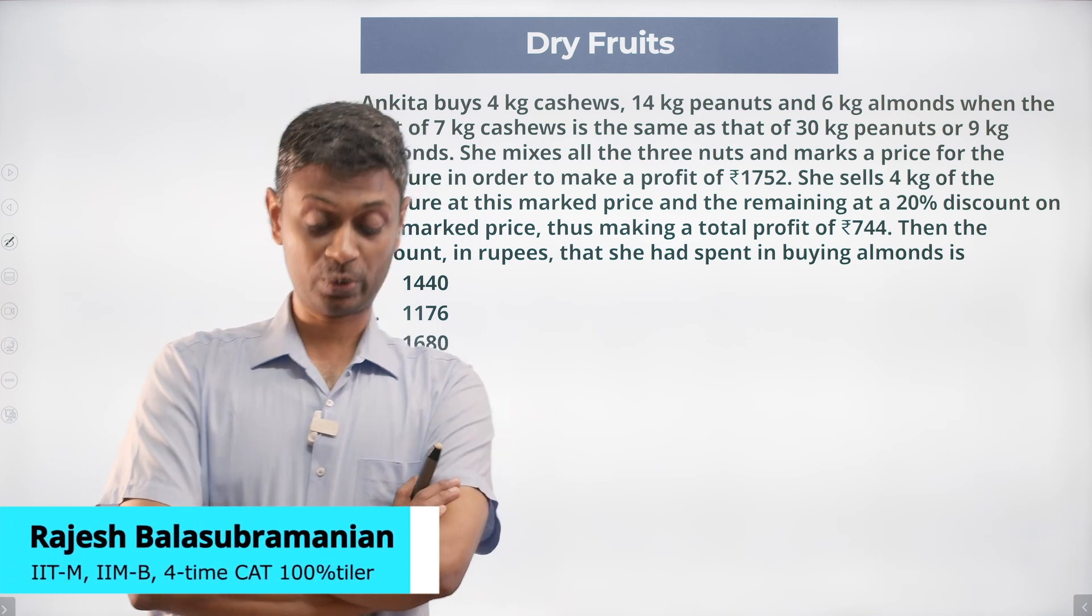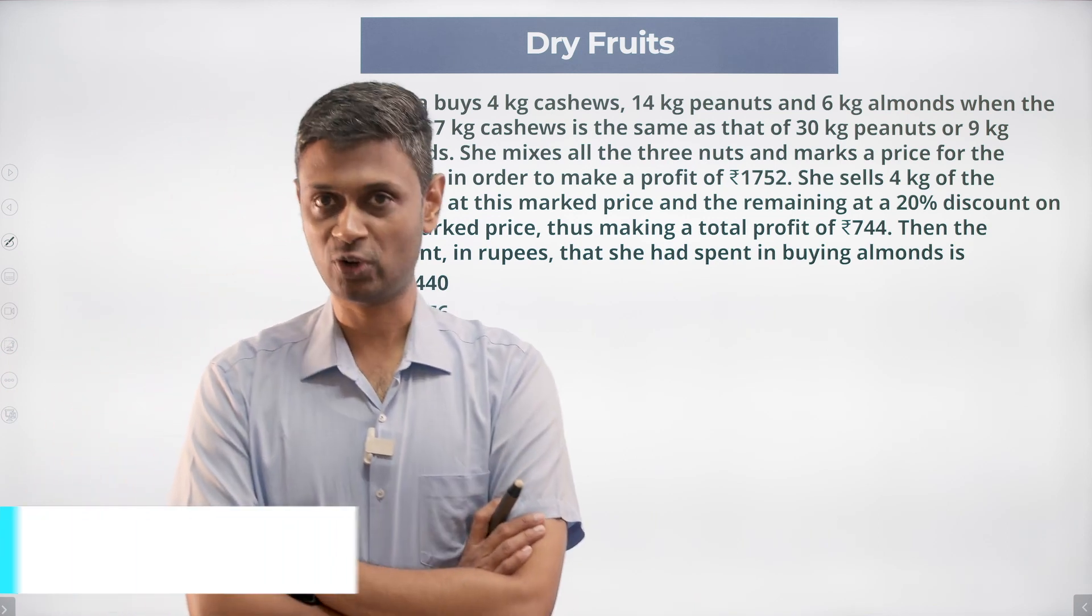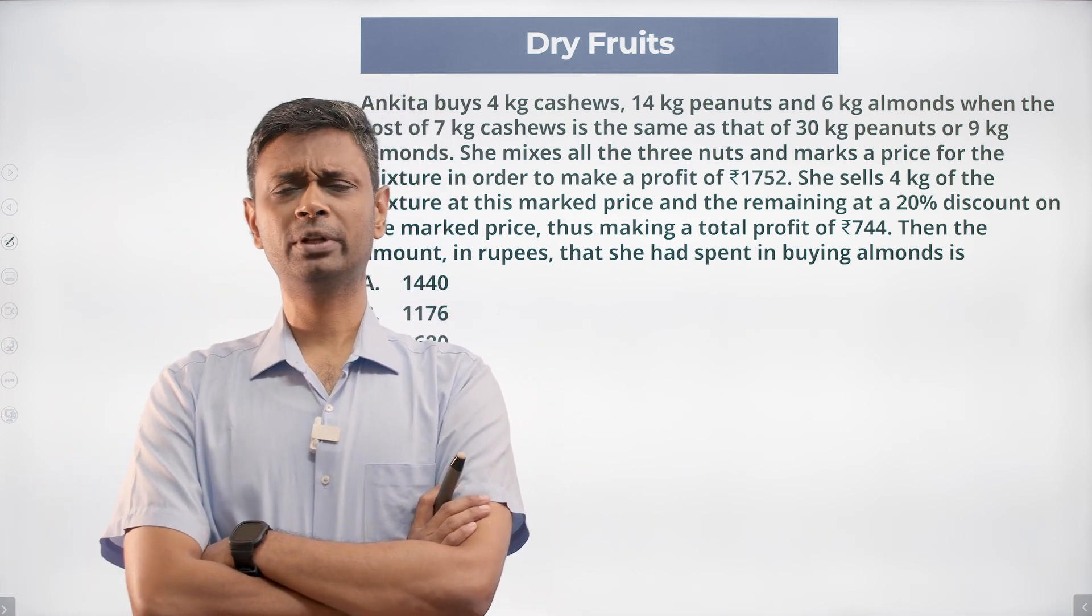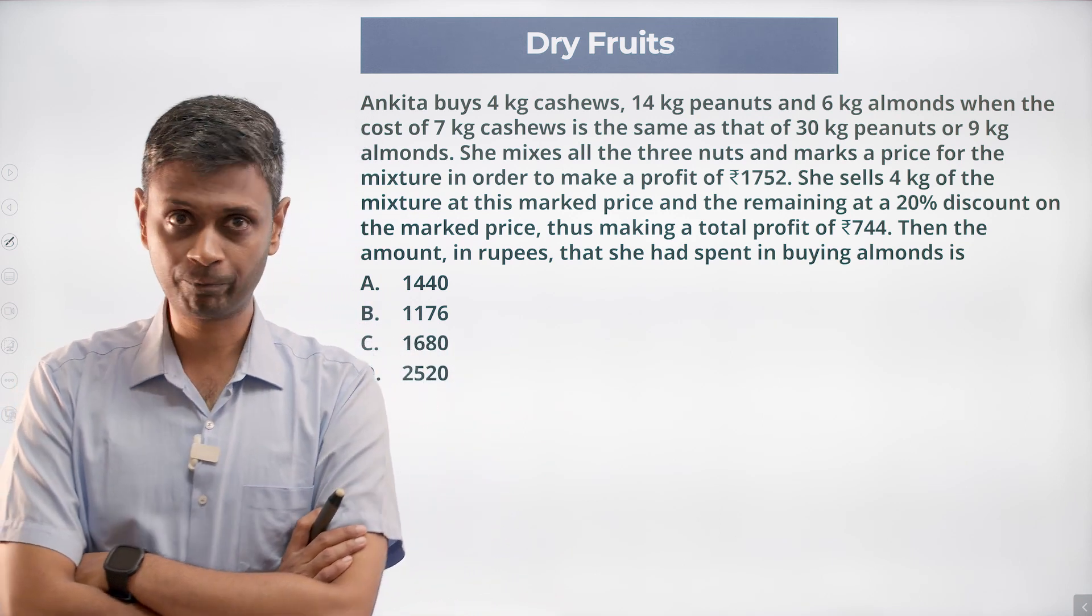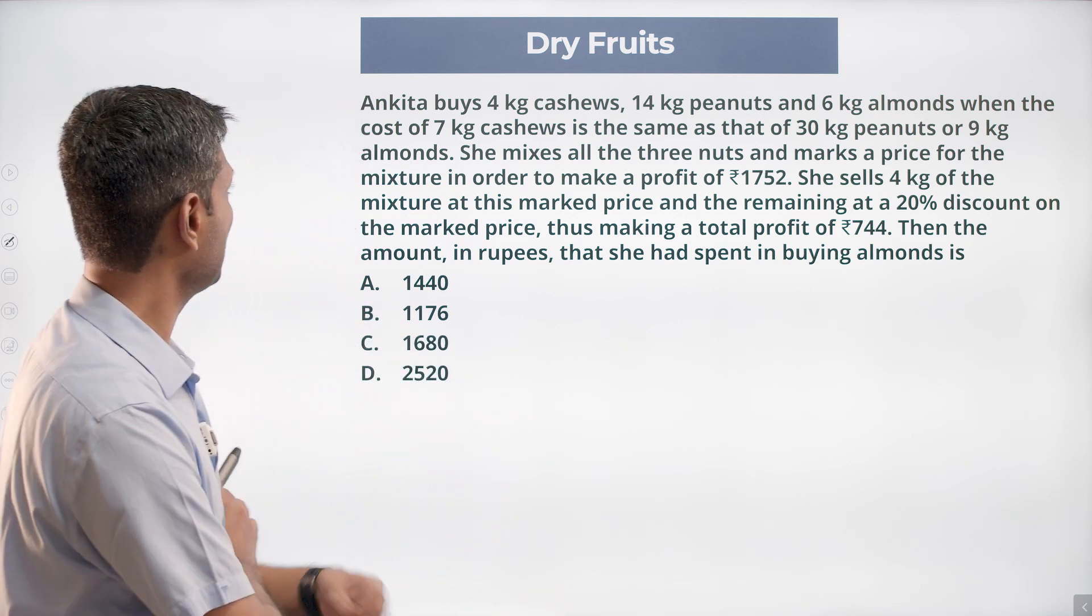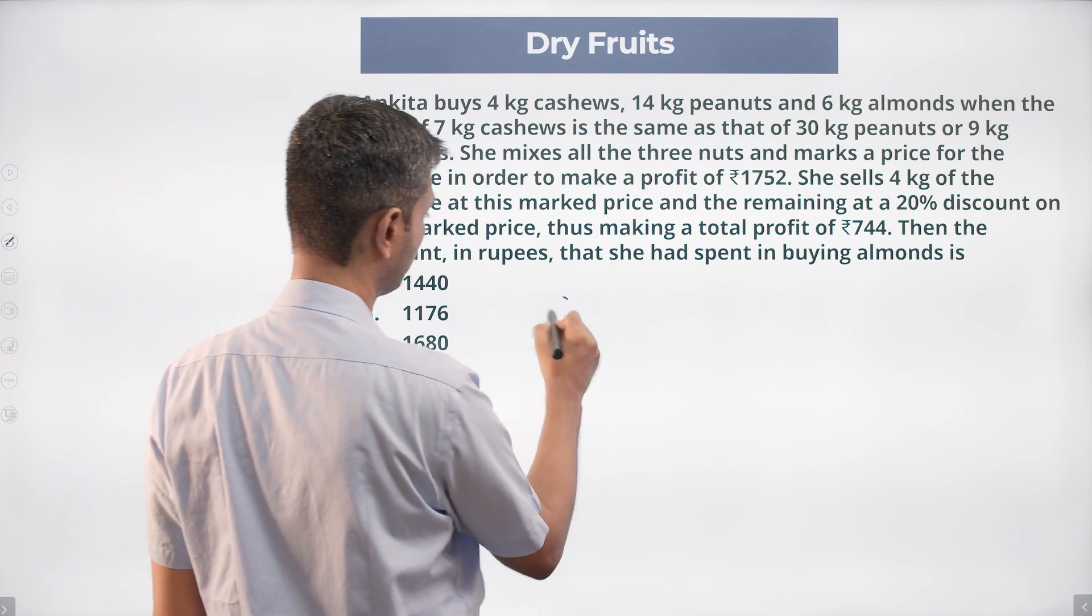This question drove me mad properly when I tried solving it. I kept looking for cute methods, they just weren't there. Let's attack this. Ankita buys four kilograms of cashews.